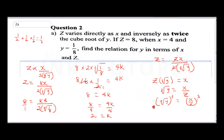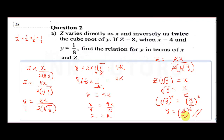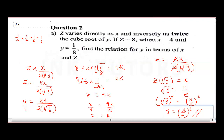When we raise the cube root to the power of 3, the root cancels, leaving y = (x/z)³. This is our answer for y in terms of x and z. That takes us to question 2b.